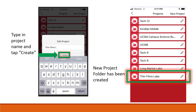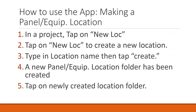Making a panel equipment location. In a project, tap on NewLock to create a new location. Type in the location name, then tap Create. A new panel equipment location folder has been created. Tap on the newly created location folder. Create new panel equipment locations and tap Create. New panel equipment locations have been created.